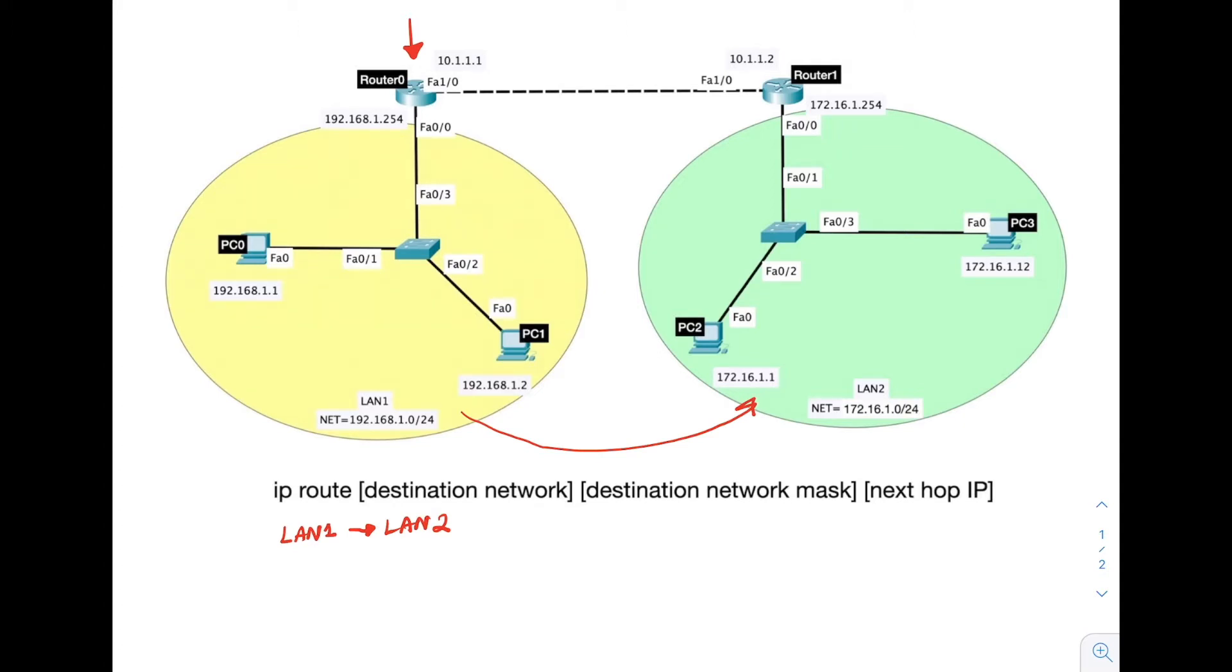The first parameter we need is the destination network address. Here, the destination network is LAN 2. From the topology, we know that LAN 2's network address is 172.16.1.0 slash 24. So we will write 172.16.1.0 in the place of destination network address parameter.